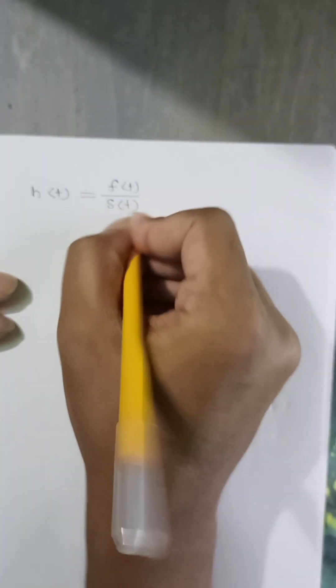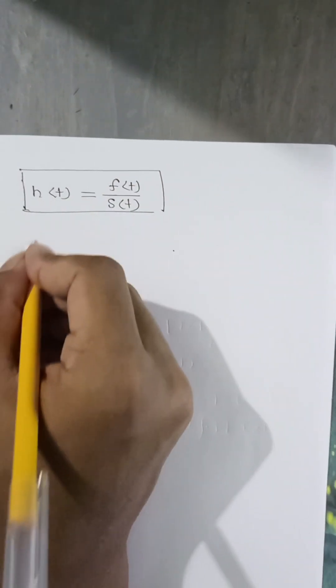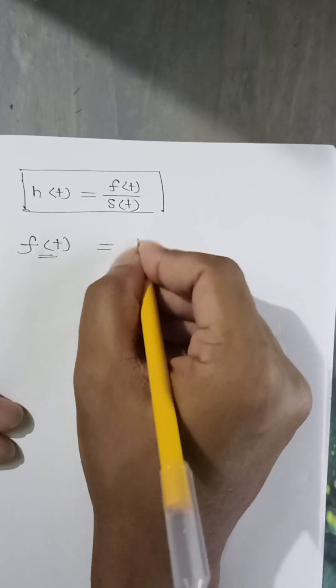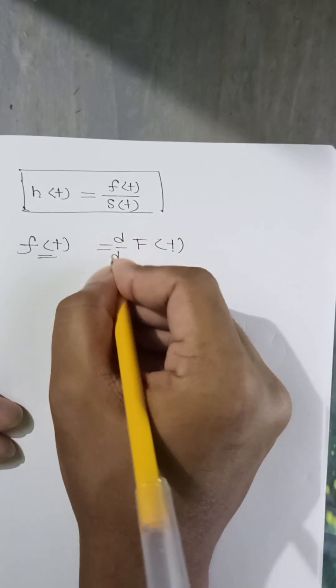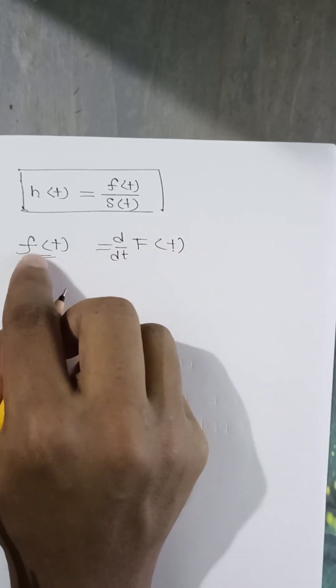So survival function S of t. We will see the relationship, we will prove this relationship. Let's start with f of t. You know f of t will be equal to the derivative d/dt of F of t.